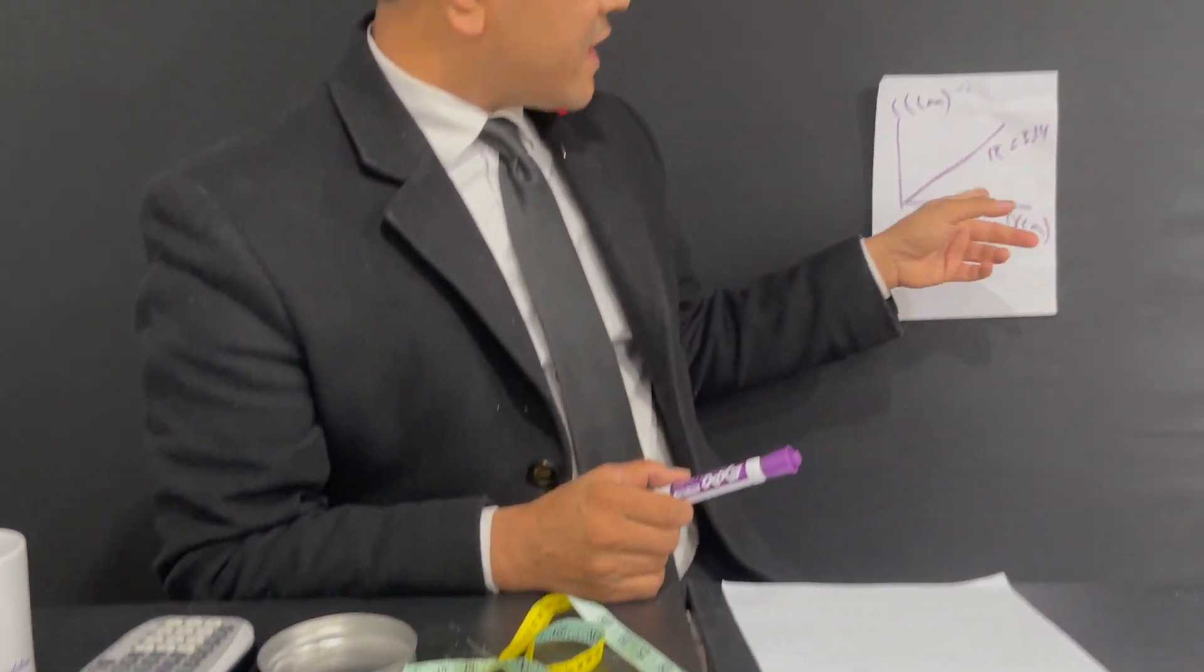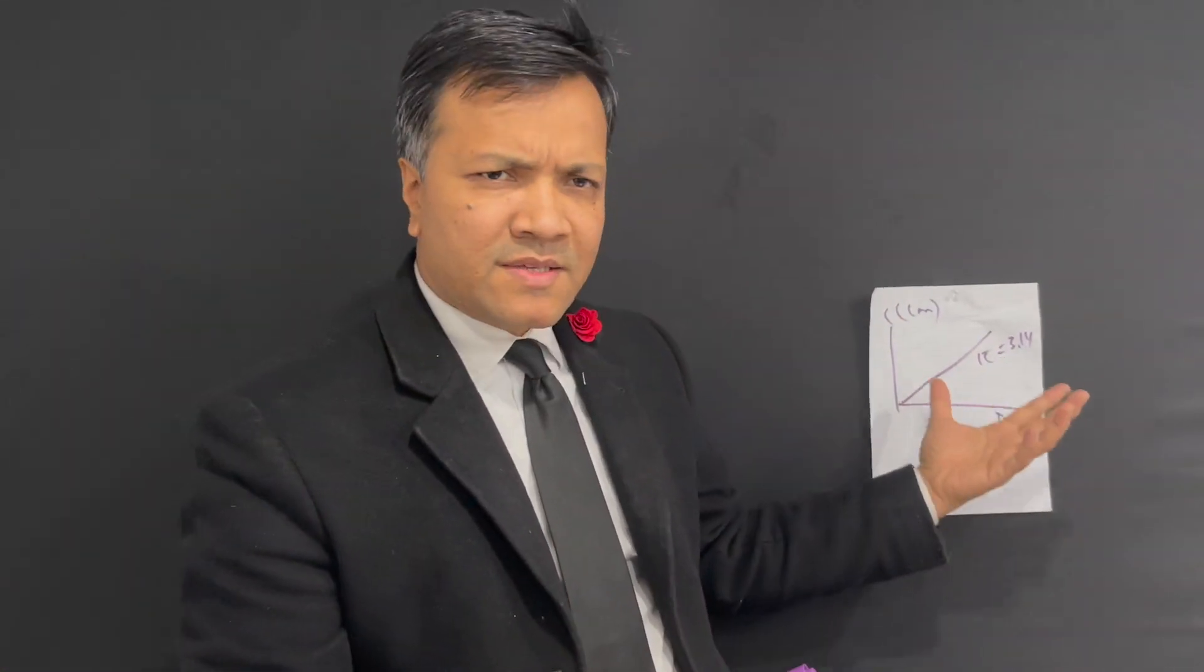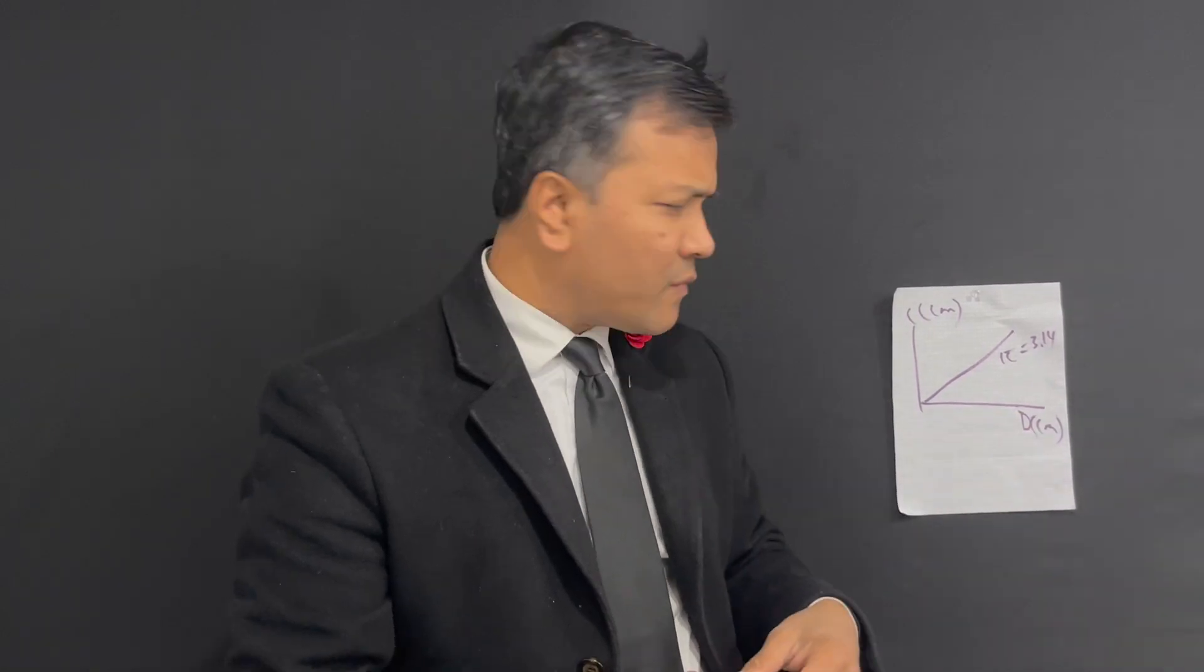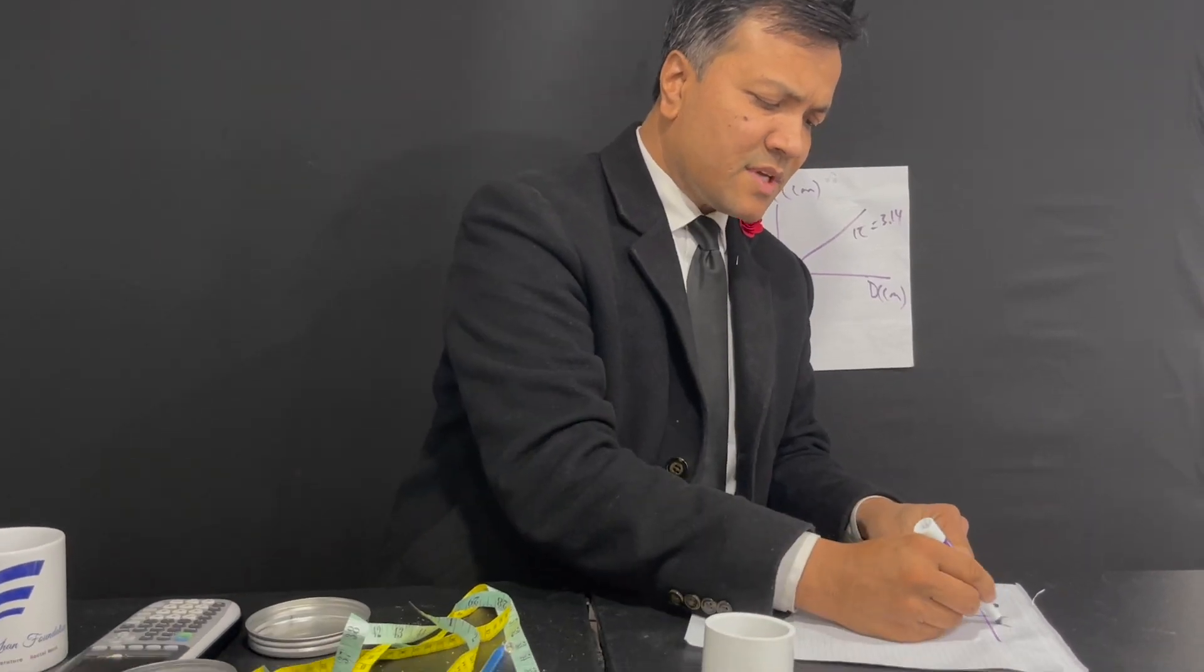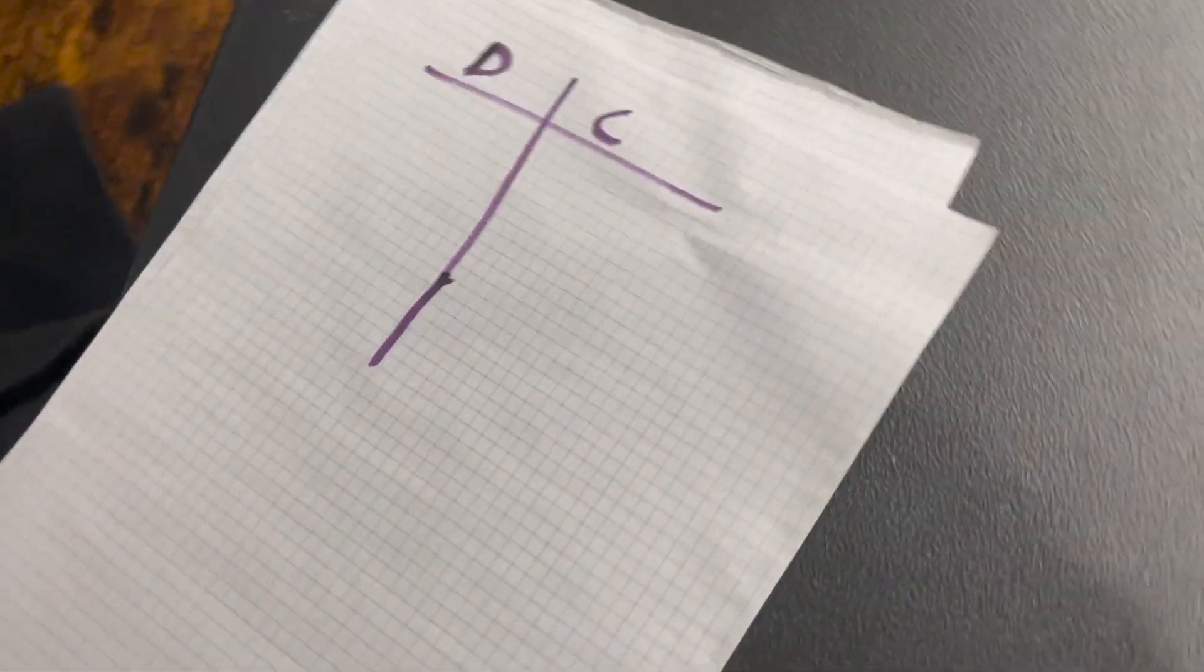Make sure that the unit-unit cancels. Centimeter over centimeter so cancel. So there would be no unit, pi is 3.14. This is x-axis and this would be circumference. So this is y-axis.